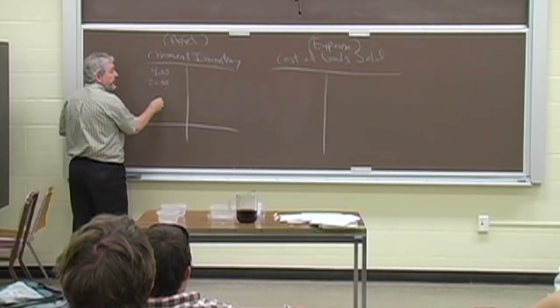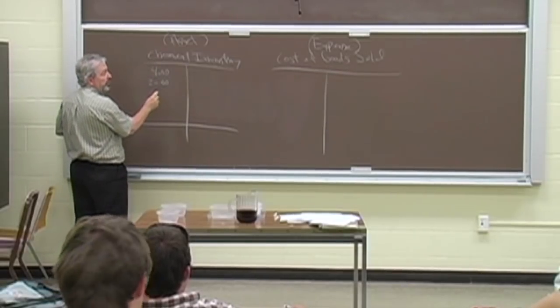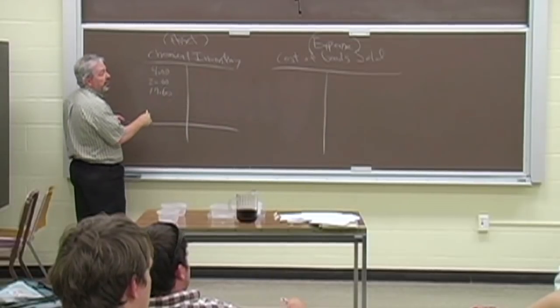Now, what are we doing up here? Beginning inventory plus the red purchase. How much is the blue purchase? $17.60. And the green? $19.60.